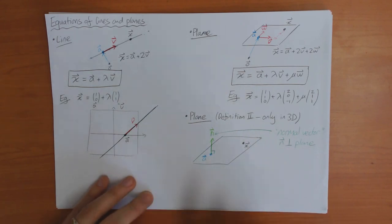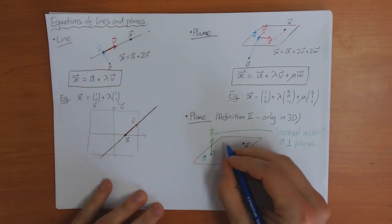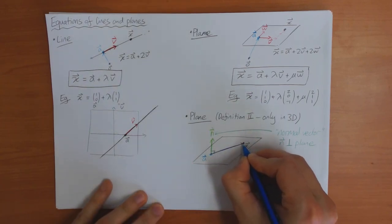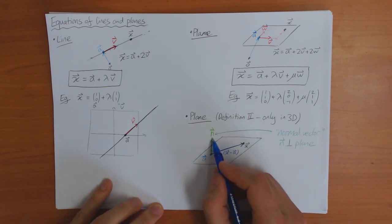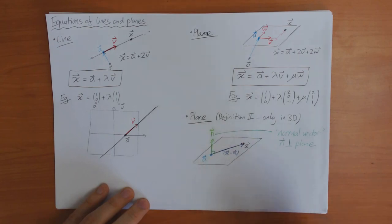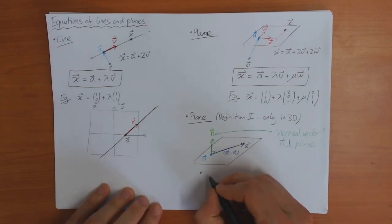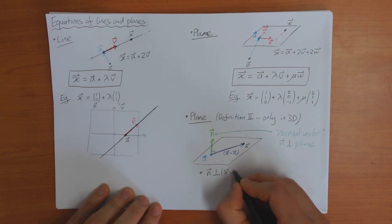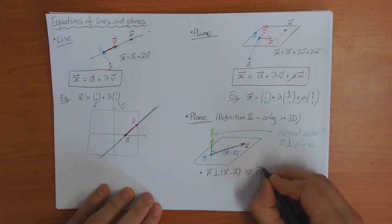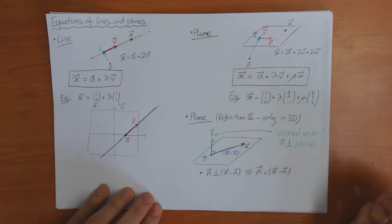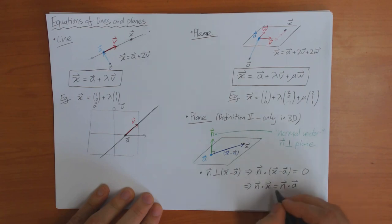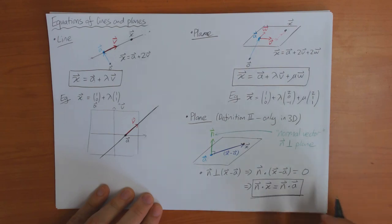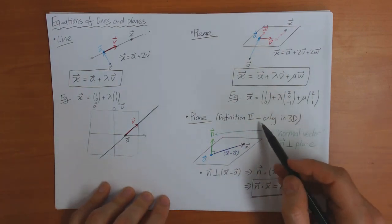If you know point a and the normal n, you can define the plane another way. The vector x minus a is the vector going from a to x, which lies on the plane, and therefore must be perpendicular to the normal vector n by definition. Since two perpendicular vectors have scalar product equal to zero, we get n dot (x minus a) equals zero, which rearranges to n dot x equals n dot a. This is the second definition of a plane.